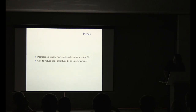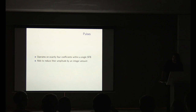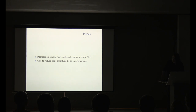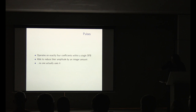Then there's COUP — nothing actually uses it, and here's why. It operates on exactly four coefficients within a single scale factor band. That means it's a very small set of situations in which COUP can actually make a difference. We don't use it, libfaac doesn't use it, FDK-AAC doesn't use it, and whatever YouTube uses doesn't use it. It's in the specification, but no one uses it because it's incredibly hard to compute — calculating whether changing the amplitude of four coefficients will make a big difference is simply not worth it.